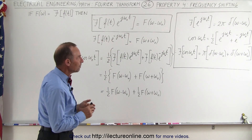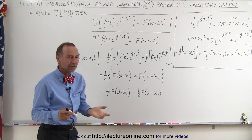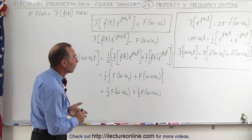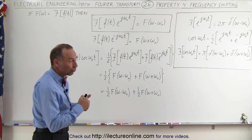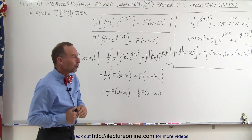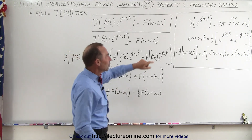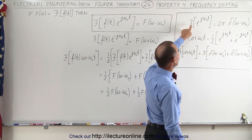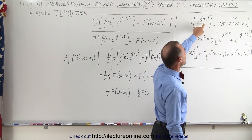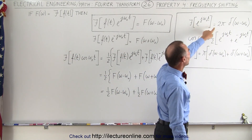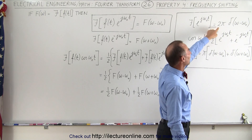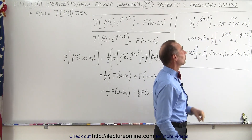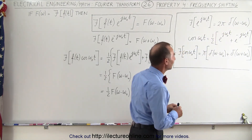Is that good for anything? Turns out it's extremely important. First of all let's do a little bit of review. We know that when we take the Fourier transform of e to the j omega t, we get two pi times the delta function, omega minus omega sub nought.